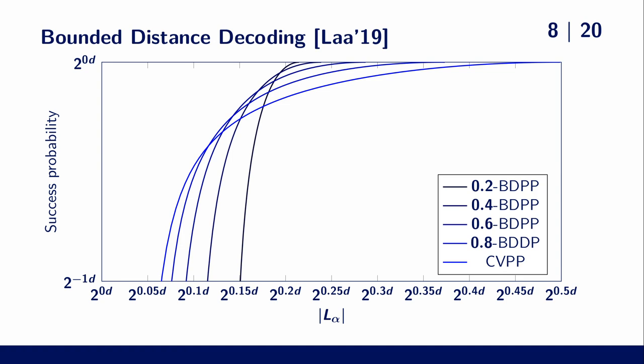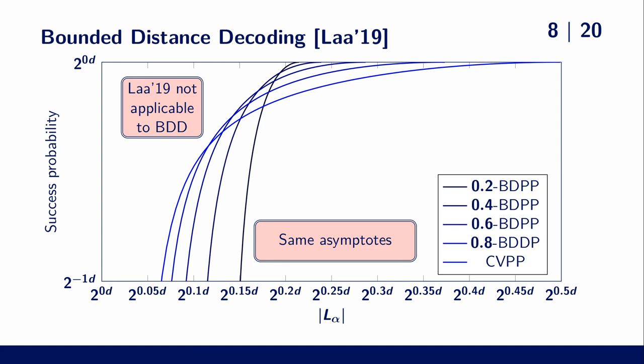Firstly, this guarantee could not be incorporated into one of the two lower bounds. Secondly, we still have these asymptotes. And thirdly, this lower bound seems to imply that BDD is actually harder for the iterative slicer than CVP for small list sizes.